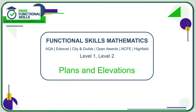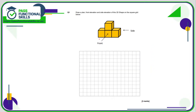Let's take a look at plans and elevations. We need to draw a plan, front elevation, and side elevation of this shape. A plan would be the bird's eye view — if you're looking down, all you would see is this square, this square, and this square in a straight line. So from above, that shape would look like that. That's the plan view.